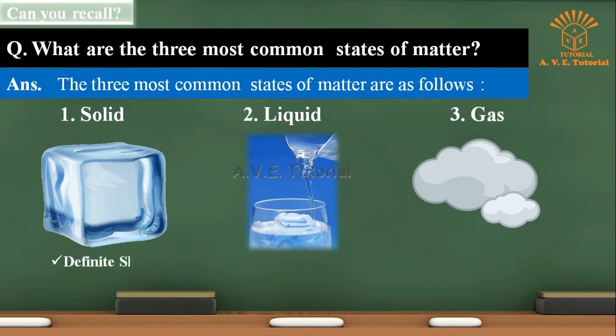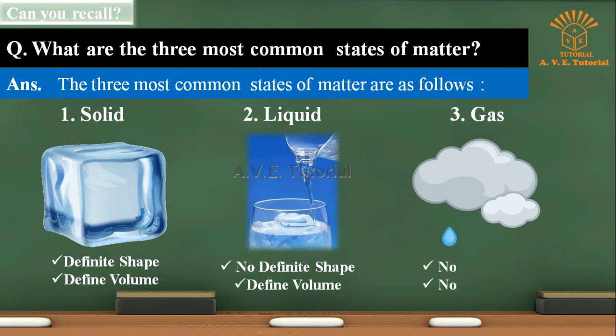As we know, solid has definite shape and definite volume. Liquid has no definite shape but has definite volume. Gas has no definite shape and no definite volume.